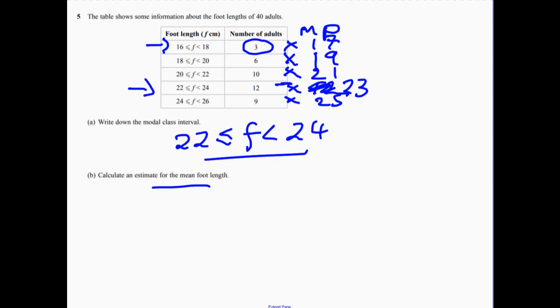Right, so let's multiply all these across. And what I'm trying to do is work out the total length of all the foot lengths together. So we're just multiplying these across.